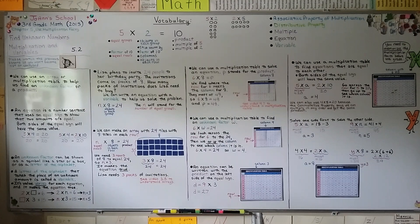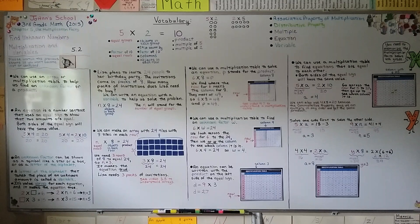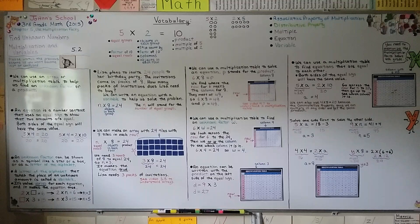Keep in mind that you can use an array or a multiplication table to help find an unknown factor or product. You might see a symbol like a star, triangle, or box for an unknown, or a letter of the alphabet called a variable — because its value varies from equation to equation. There's an image of the multiplication table and a blank one on the Facebook page to print out and use for homework. Hope you have a wonderful day — see you next time!